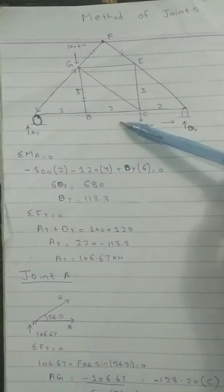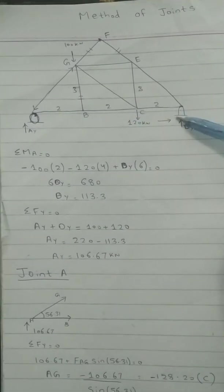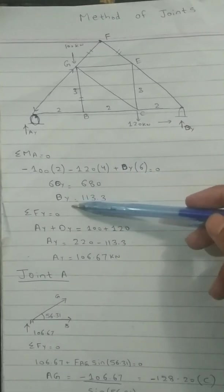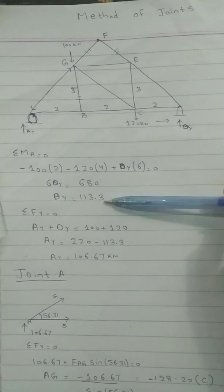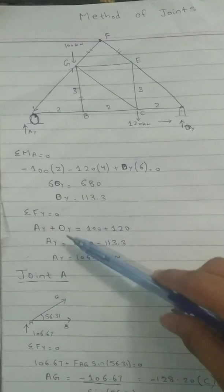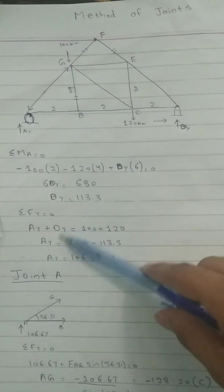Plus this distance is two, four, six, Dy, so anti-clockwise. By solving this, the reaction Dy is 113.3 kilonewton.